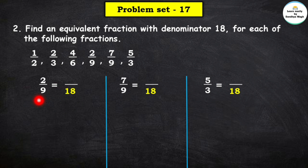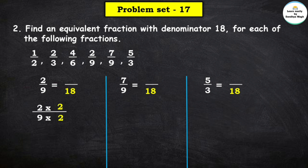Next we find the equivalent fraction of 2 upon 9 with denominator 18. In the 9 times table, 9 × 2 = 18. So we multiply both numerator 2 and denominator 9 by 2: 2 × 2 = 4 and 9 × 2 = 18.